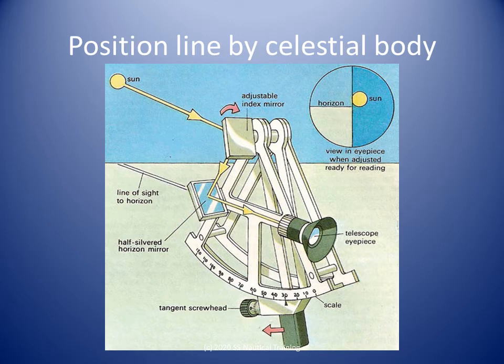we are measuring the angle between the body and the horizon at a particular time, so the horizon must be visible when using a sextant. We obviously do not see stars during the day, so star sights are done at sunrise and sunset.